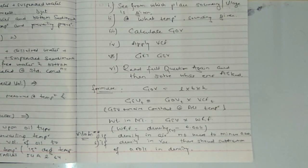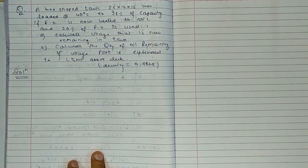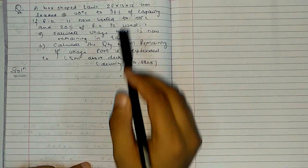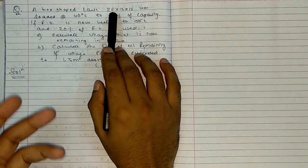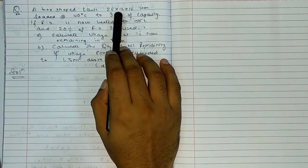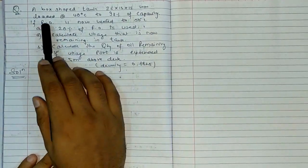We have completed our important terms. Now we have to solve a numerical. Here is the numerical: a box-shaped bunker tank. Its particulars are: 28 meters × 15 meters × 12 meters.